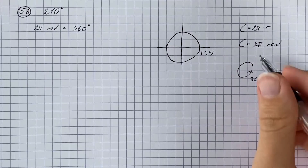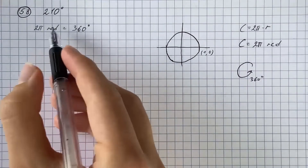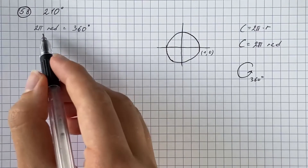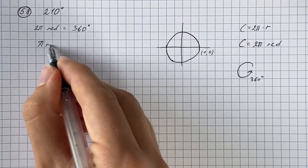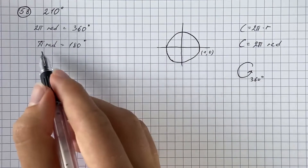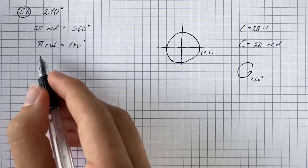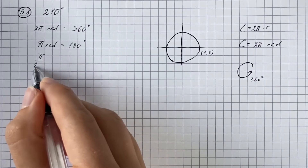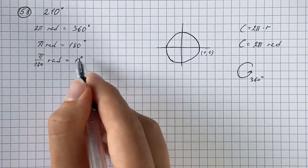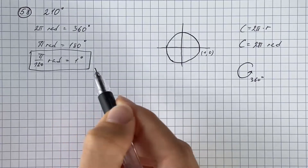So that means 360 degrees equals 2π radians. We can simplify by dividing both sides by 2 to get π radians equals 180. Then dividing both sides by 180 gives us π over 180 radians equals 1 degree. This is our conversion formula.